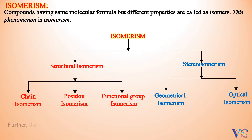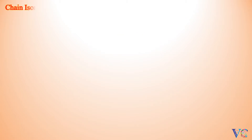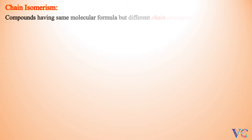Further, concepts like Metamerism, Tautomerism, and Ring Chain Isomerism will also be explained. Chain Isomerism: compounds having the same molecular formula but different chain structures are called Chain Isomers.